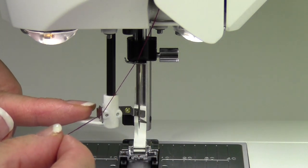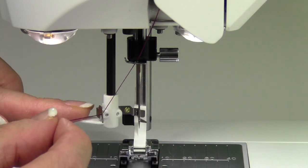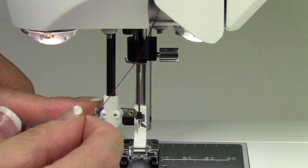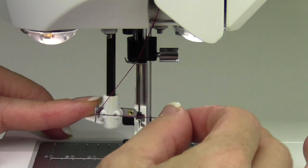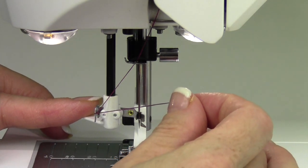Next step, bring the needle threader all the way down and then rotate the head from the back side around the needle. There's a little hook that's come towards us. I know you can't see it, but it's come through the eye of the needle.